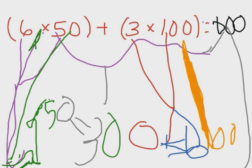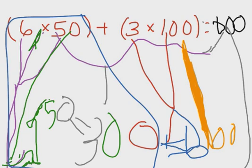Three groups of 100. I see your work over here for your six groups of 50. Can you explain your thinking to me?